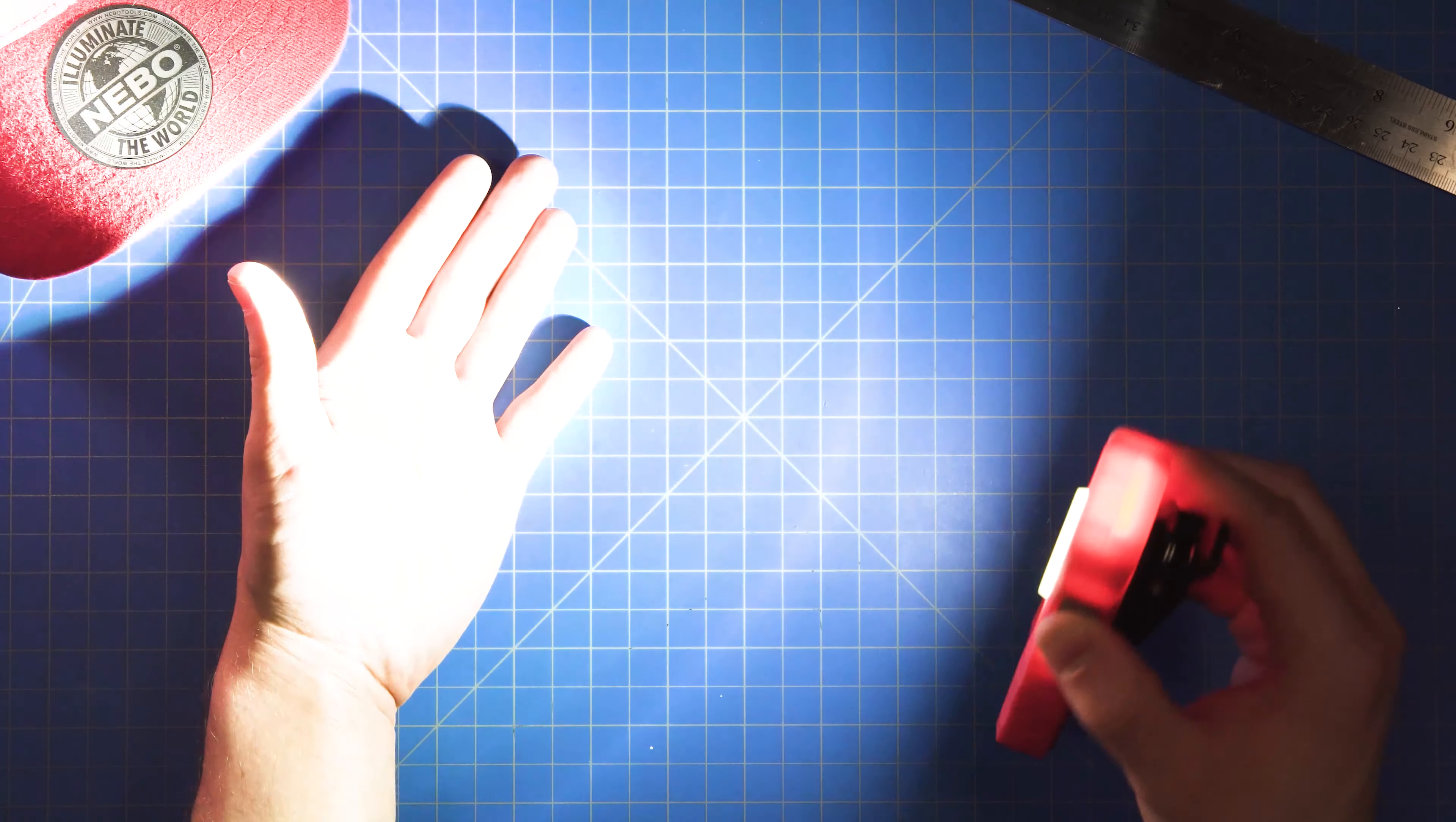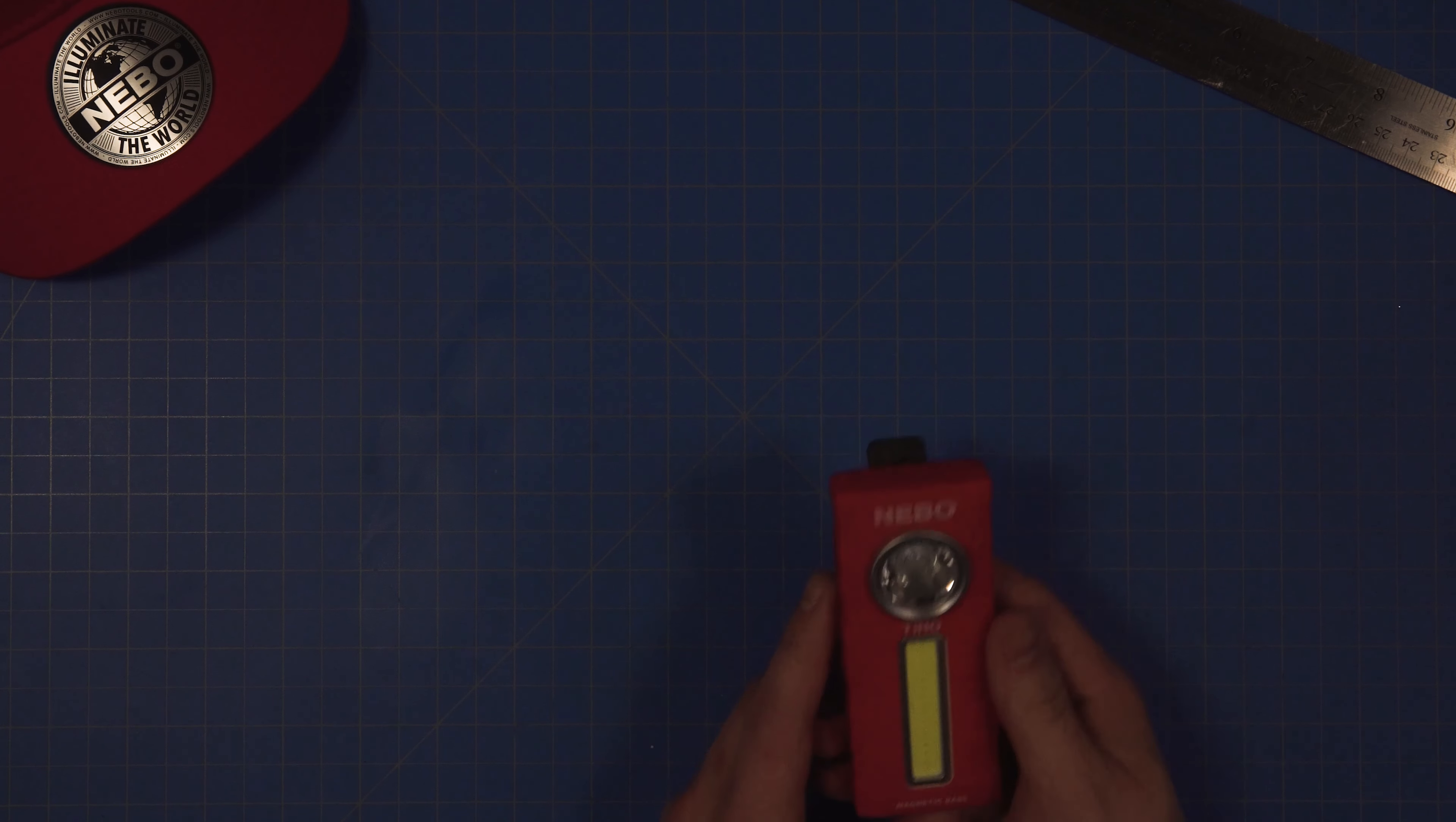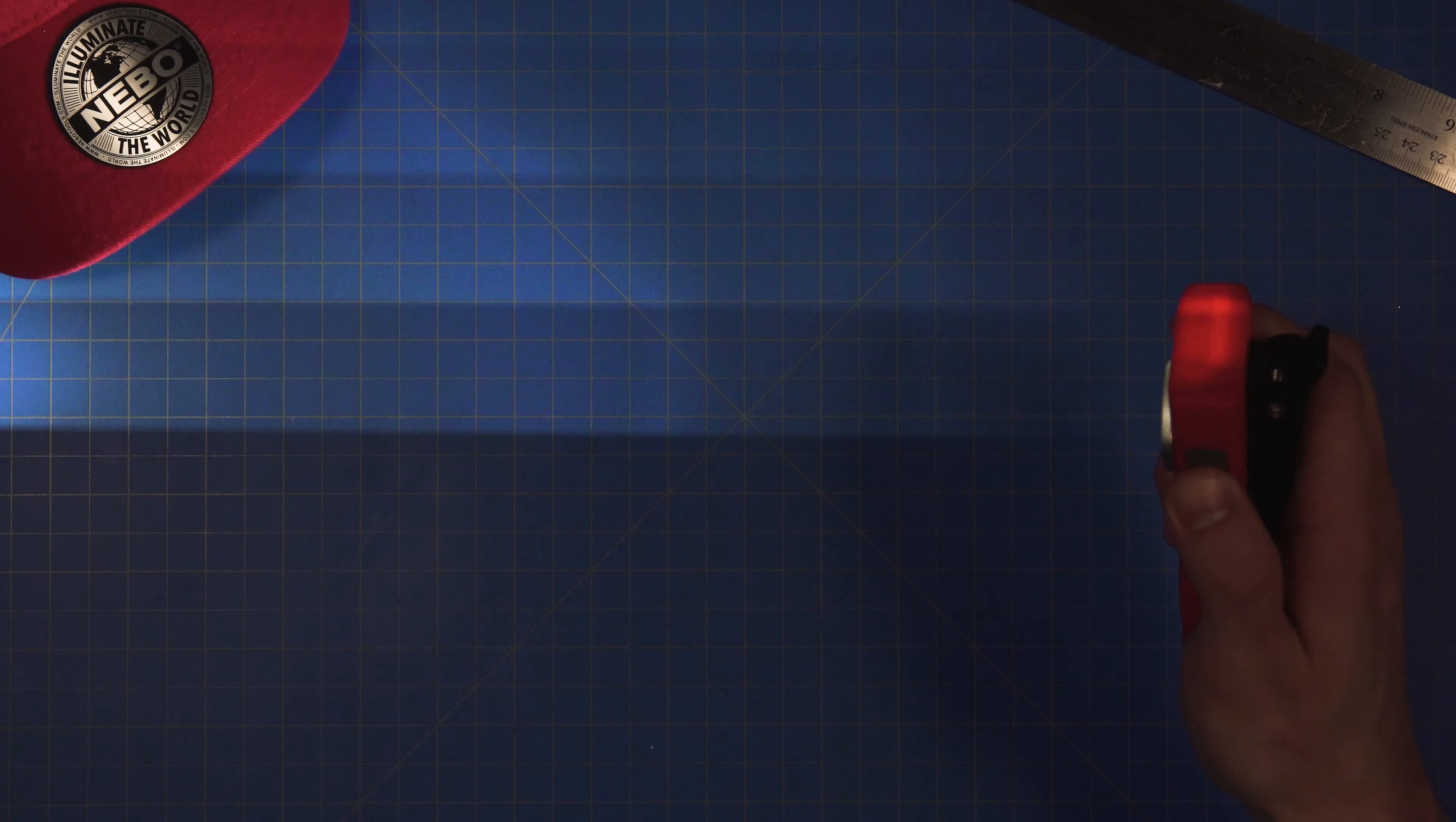Another cool feature of the Tino is its power memory setting. What that means is that the Tino will remember your last dim setting in both modes, which can be activated by double-clicking the power button. So now that I've dimmed both lights to their lowest settings, I simply have to click once for high mode or double-click for low mode.